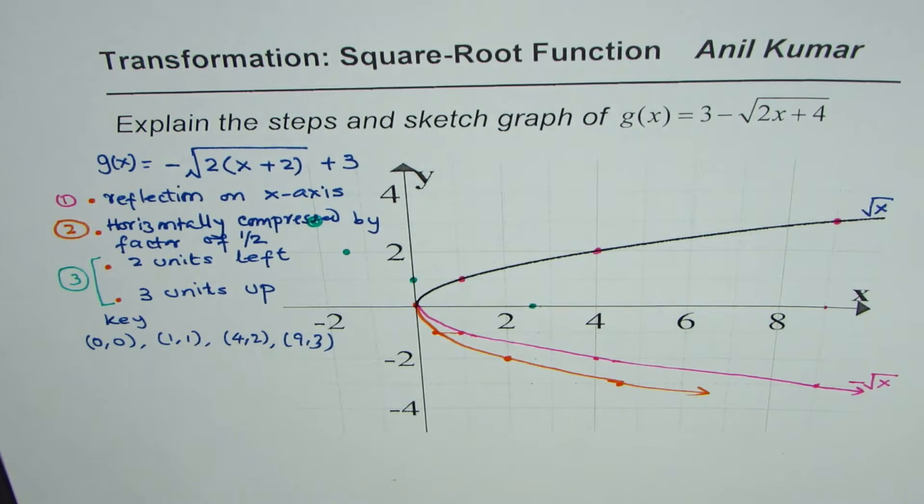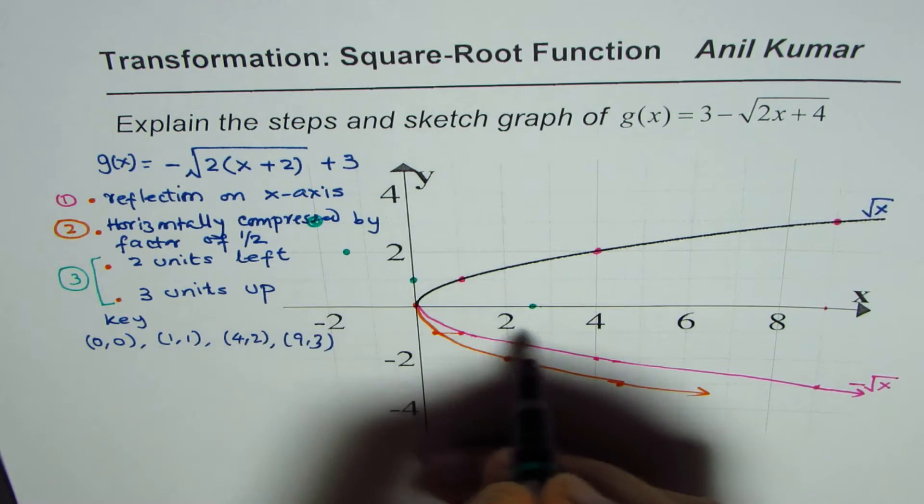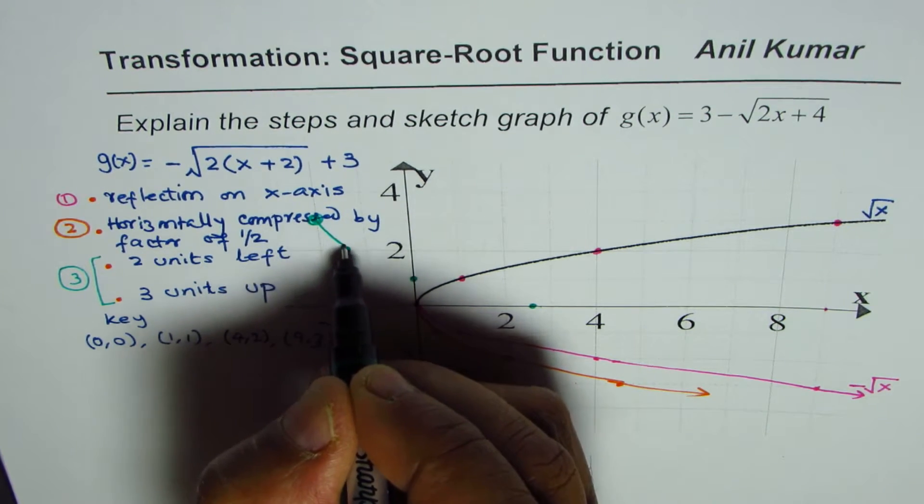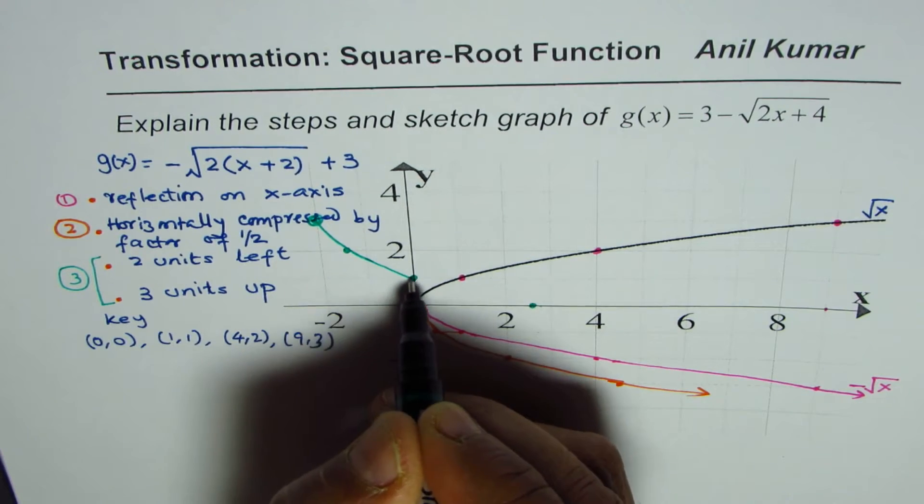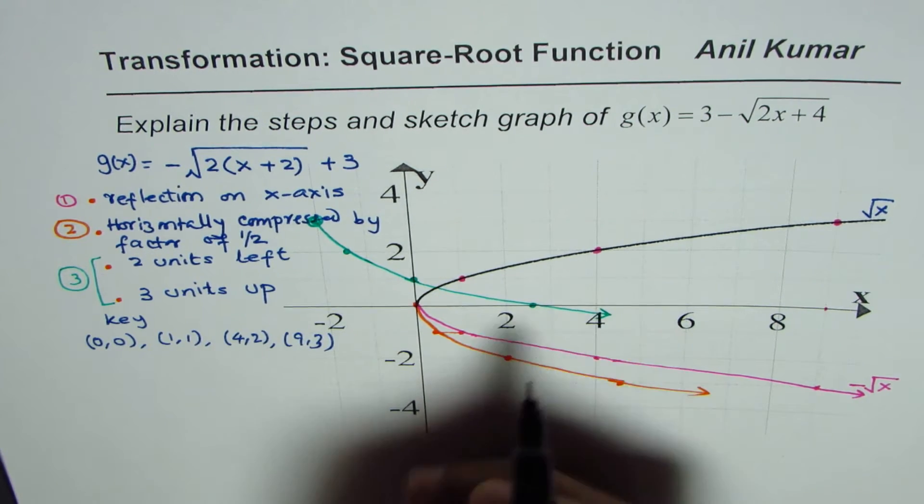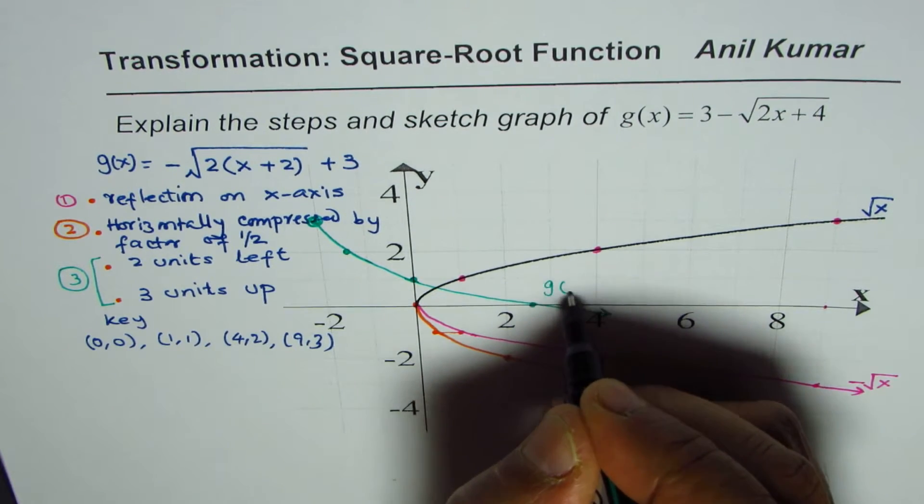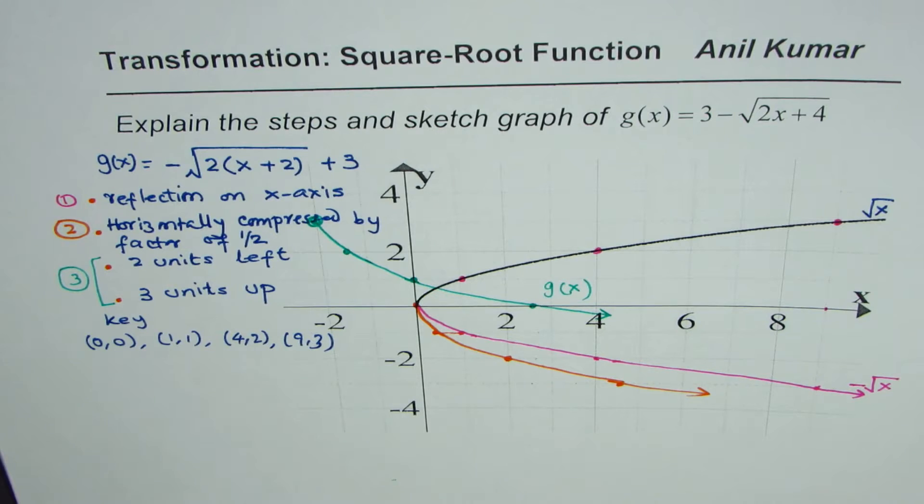Likewise you could also have a few more points. Anyway, the graph which is the final graph for us will look like this. So that is how we get the function g(x).